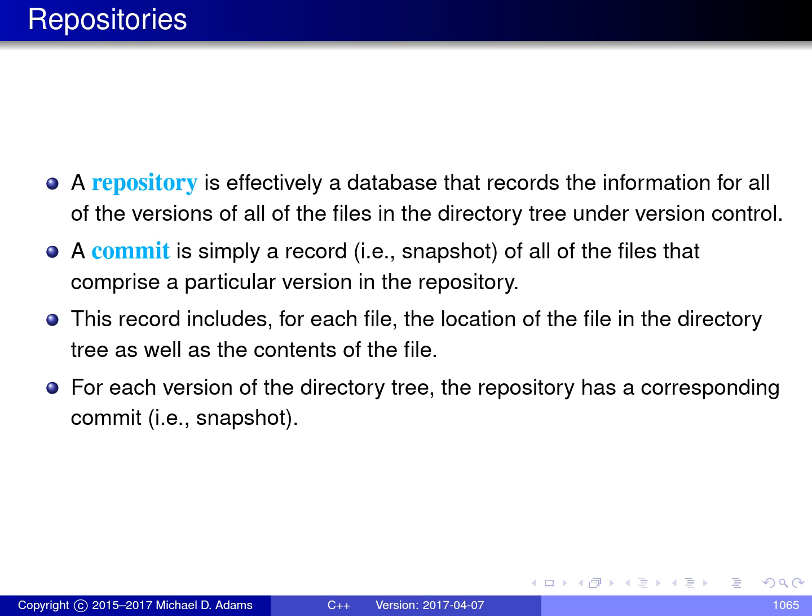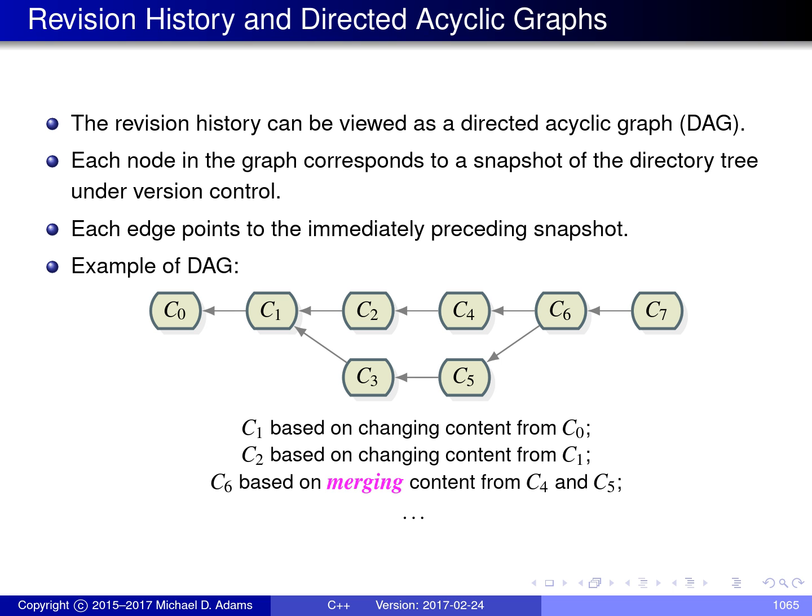At the most basic level, the Git repository can be viewed as a collection of commits, with one commit for each version of the directory tree stored in the repository. However, a repository actually has more structure than this. For version control purposes, it is important to capture which commits are derived from which other ones — in other words, how the directory tree evolves over time. For this reason, the revision history is represented as a directed acyclic graph, or DAG, where each node represents a commit and each edge points to the immediately preceding commit in the revision history.